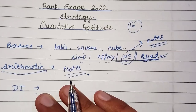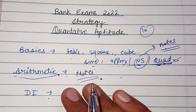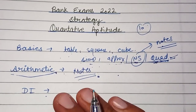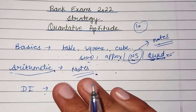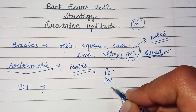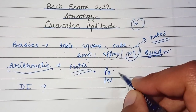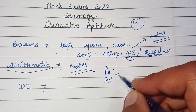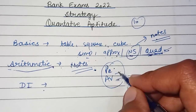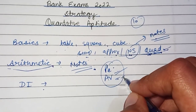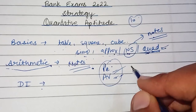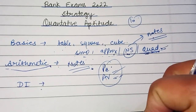Now coming to DI. The prelims level DI is very easy — just watching 4 to 5 videos will be enough to understand it. Prelims DI involves basic chapters like percentage and average, so you don't need to overthink it. It is very easy DI.